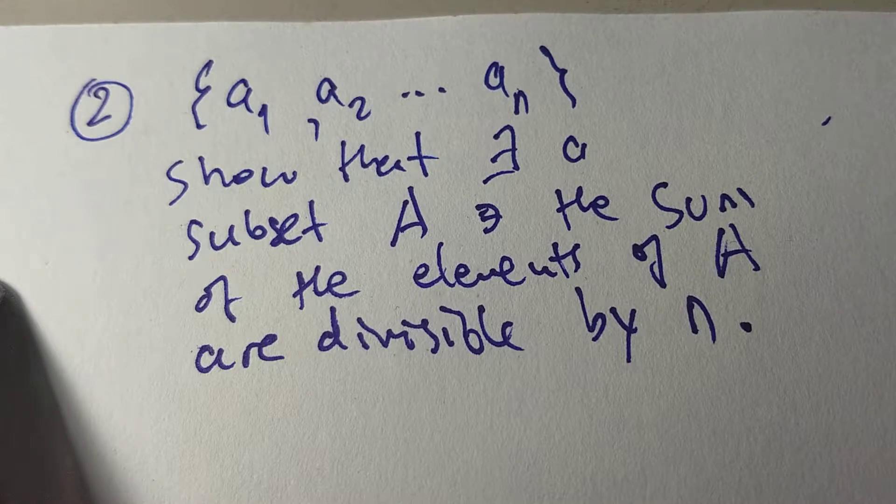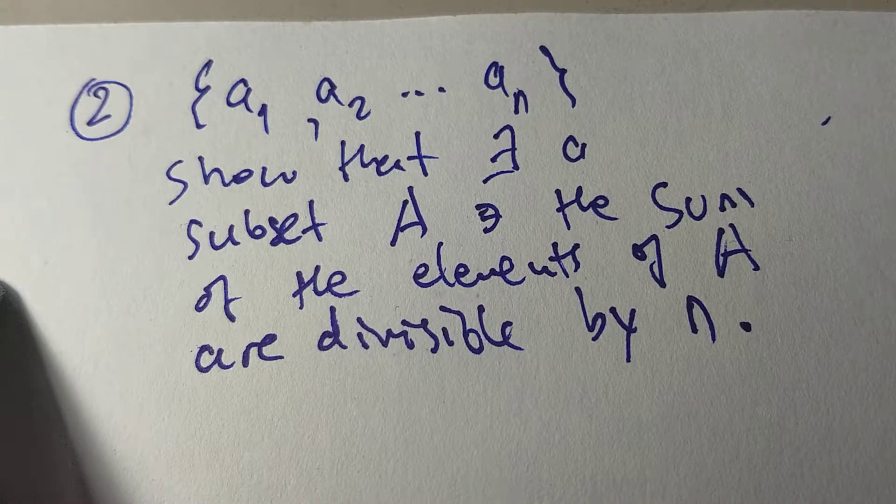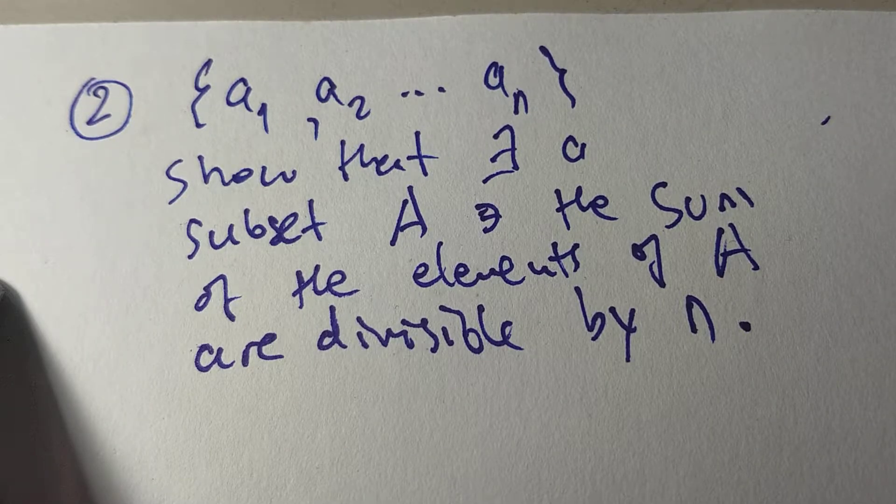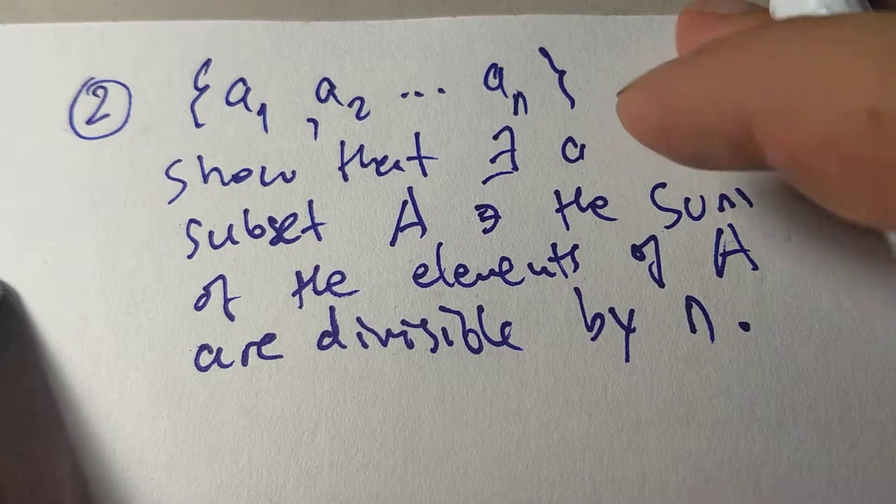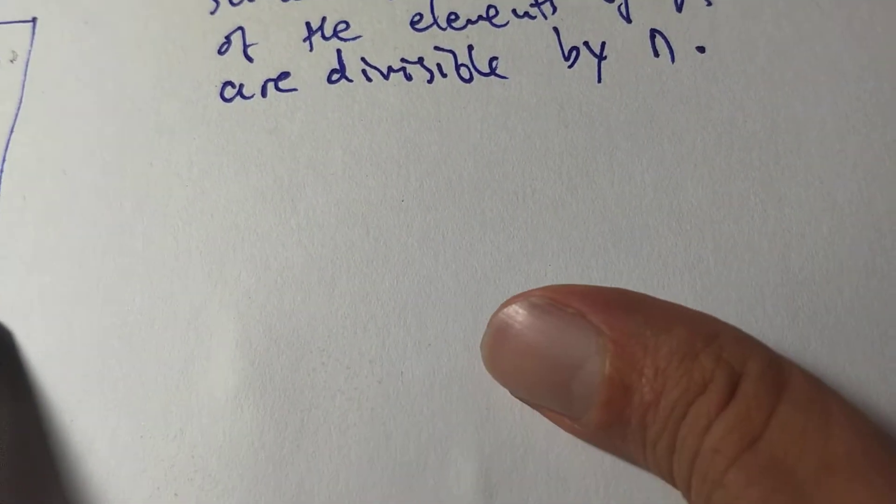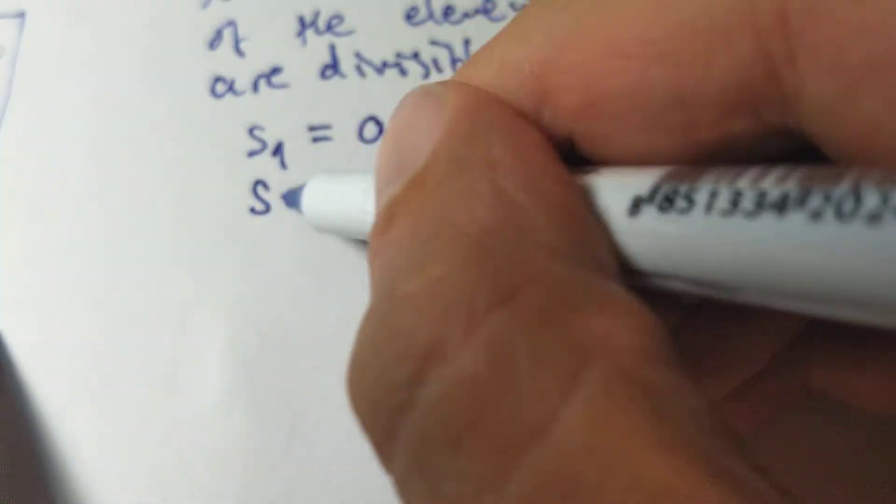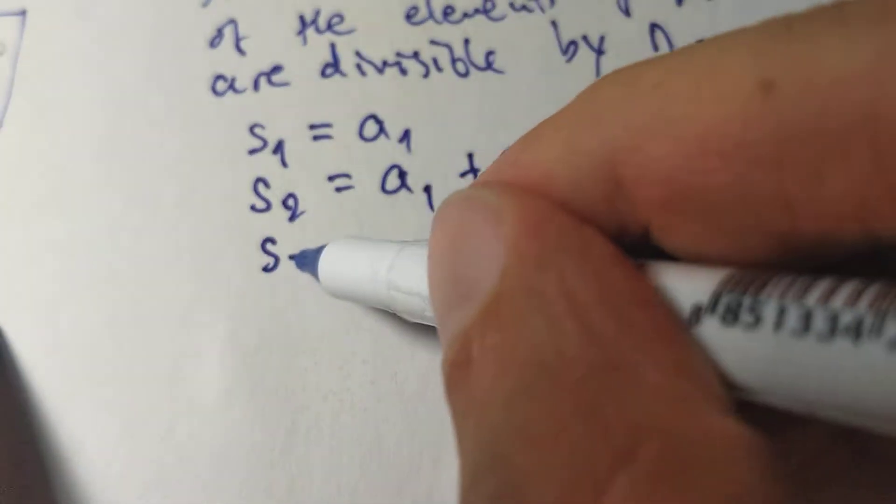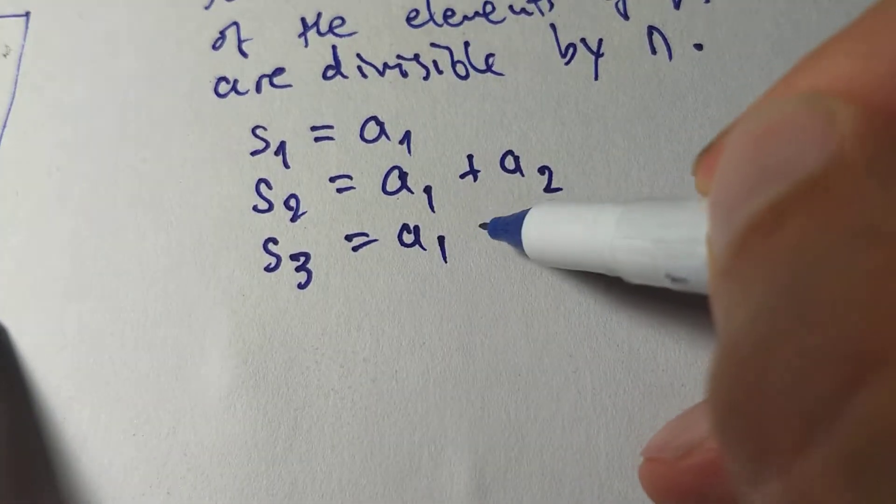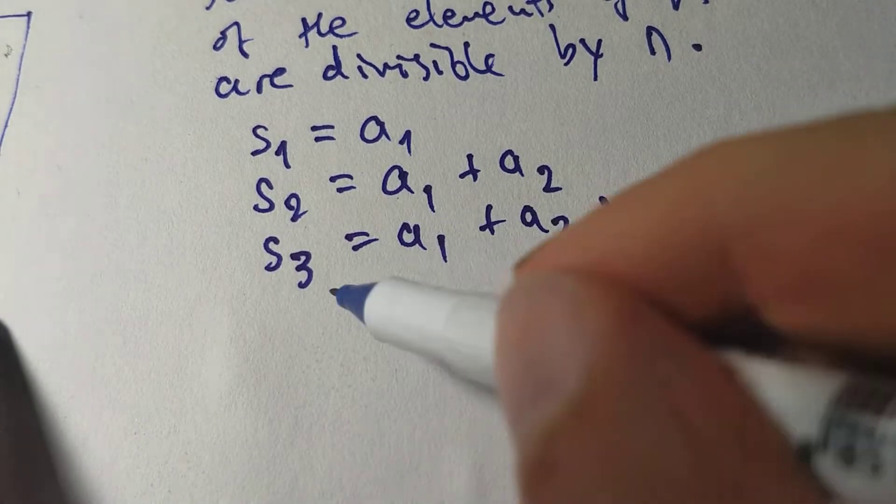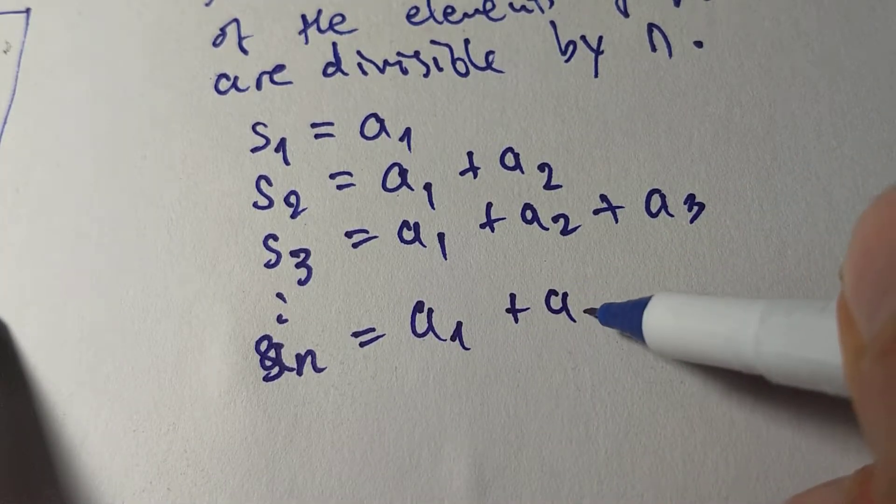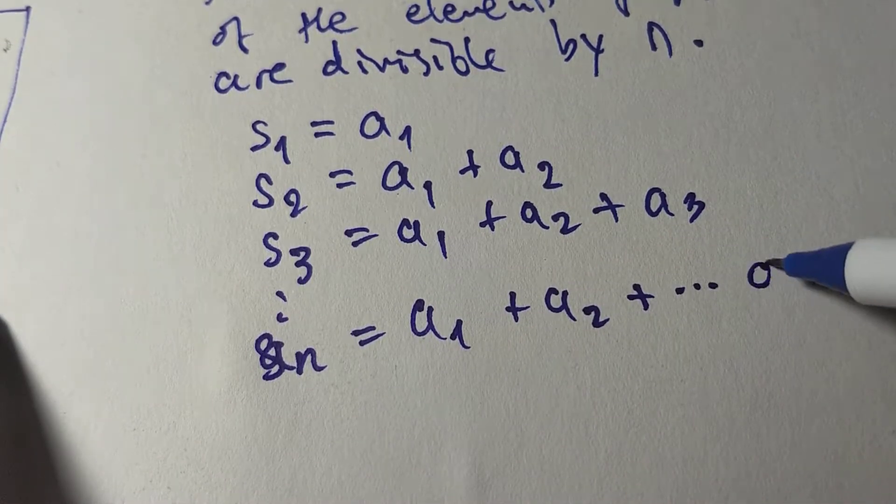You want to prove that some situation exists or some object exists. In this case, we want to prove some object exists, a subset that has certain properties. Okay, so here's how we do it. Let's take S1 as A1 and S2. We'll take sums, these kind of sums like this, A1 plus A2 plus A3, and so on, up to SN, the sum of all of them.